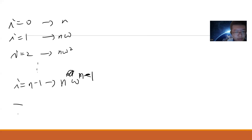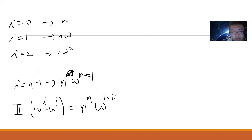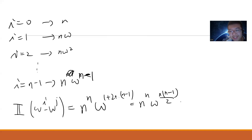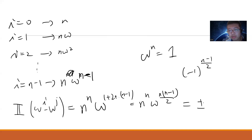The total product of all contributions is n^n times ω^(1+2+···+(n−1)) = n^n · ω^(n(n−1)/2). Since ω^n = 1, this simplifies to n^n times ±1. So the answer is ±n^n.